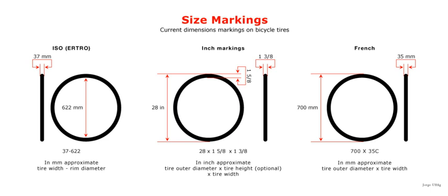Rims are designated by their nominal rim diameter and their nominal width, separated by a cross. Both are measured in millimeters. The rim type codes SS or HB precede the rim designation, whereas code C is appended to the nominal width. Examples include: SS 400 × 20, HB 422 × 25, and 620 × 13 C.